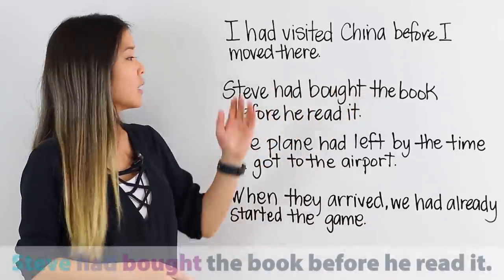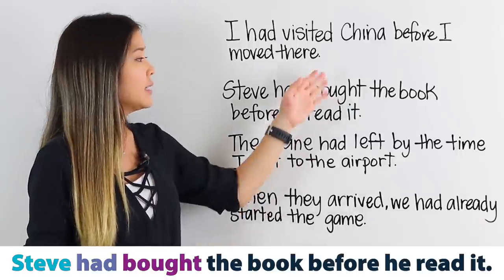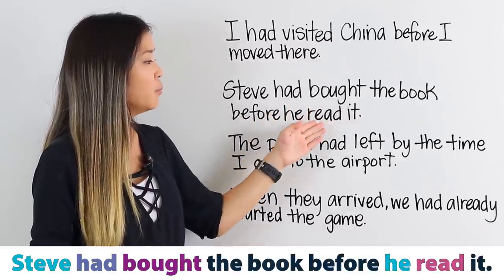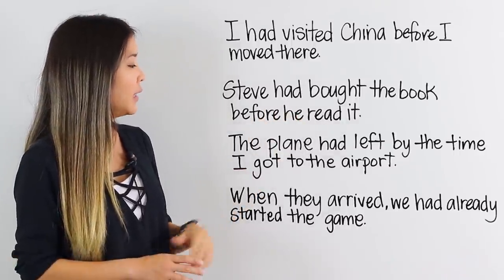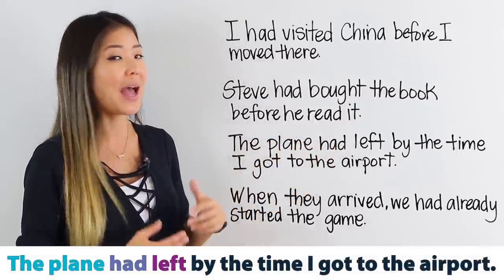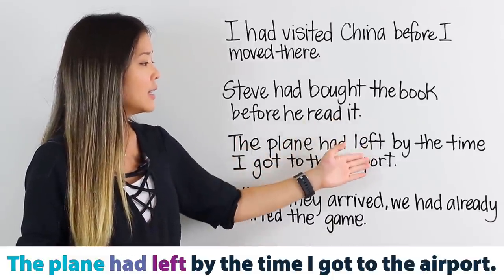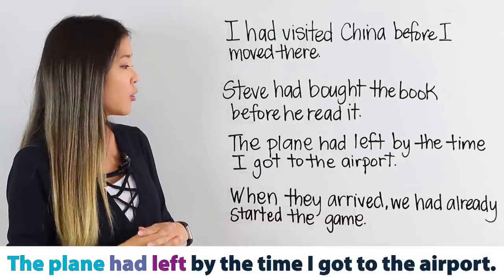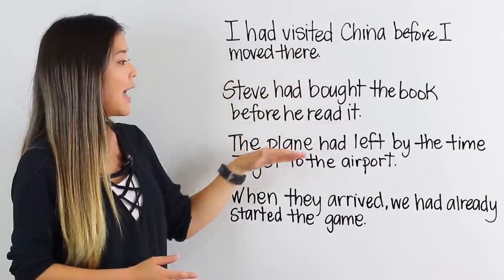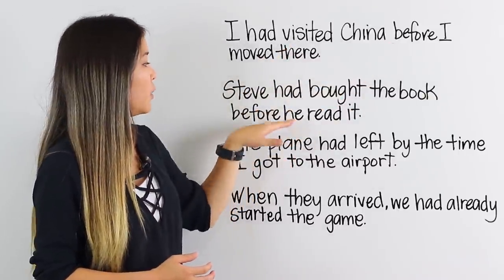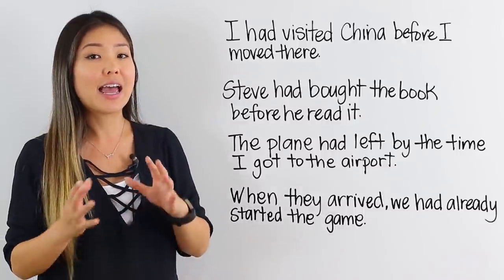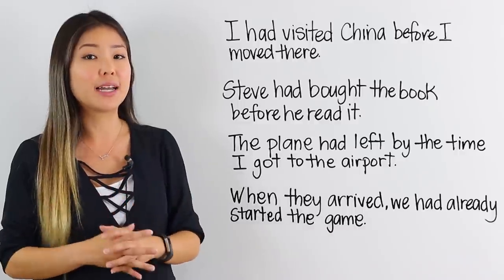'Steve had bought the book.' Again, subject, had, and past participle. In this case, the verb is 'buy': Steve had bought the book before he read it. Again, we have the simple past tense of 'read.' And finally, 'The plane had left by the time I got to the airport.' The first part of this sentence is in the past perfect tense — the plane had left. This is the past participle of 'leave.' The second verb, 'I got to the airport,' uses 'got,' the past tense of 'get.' What these three sentences have in common is that you'll see 'before' or 'by the time.' They all mean the same thing: the verb in the past perfect tense happened first, and the verb in the past simple tense happened after.